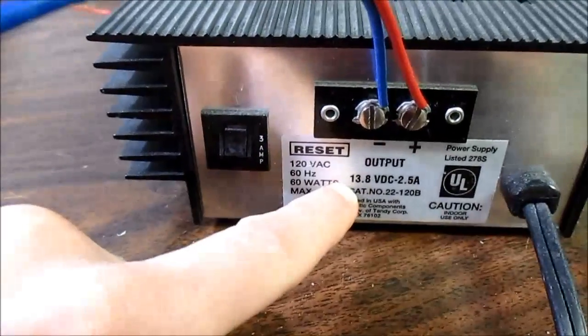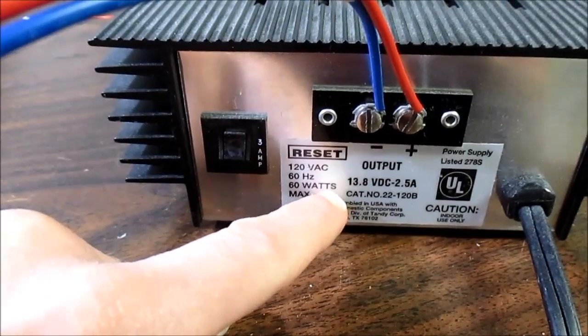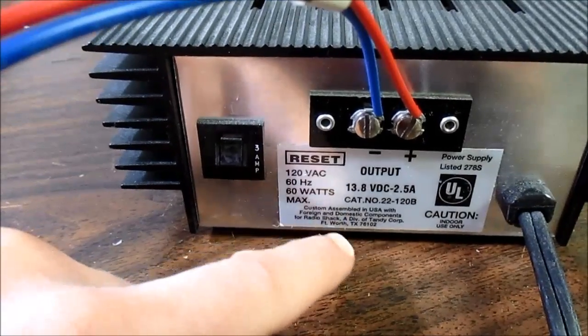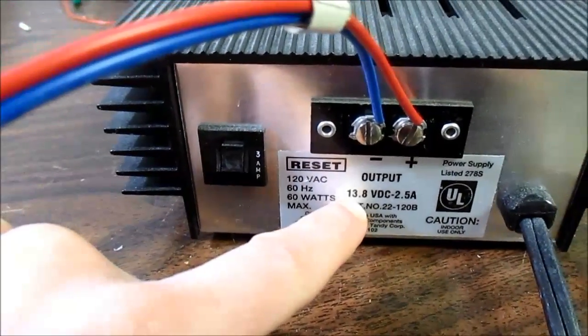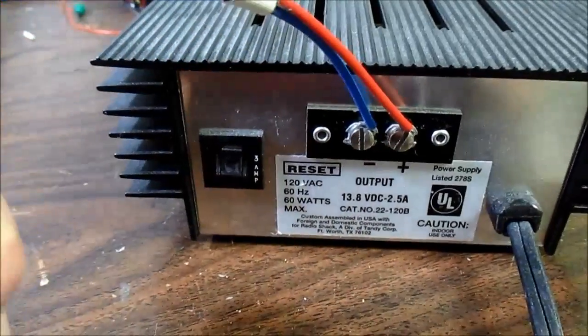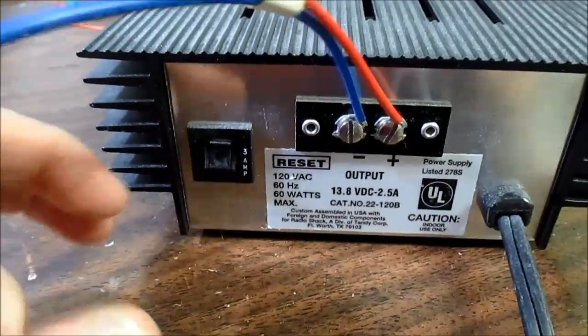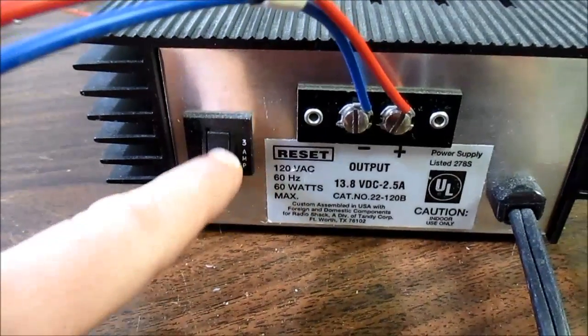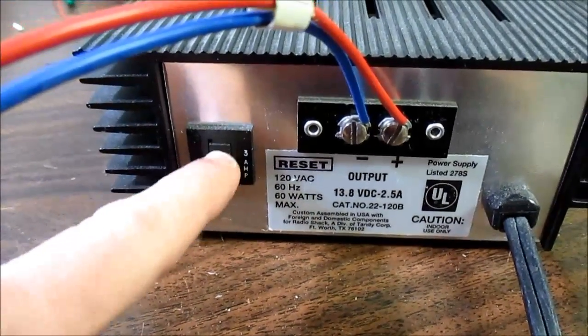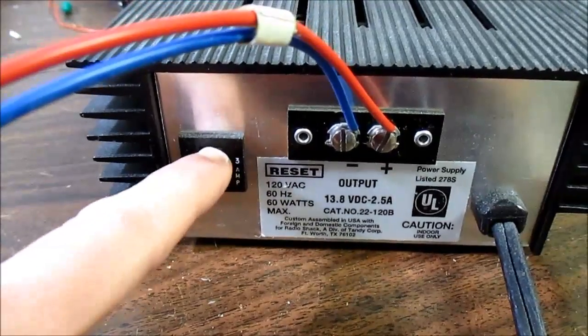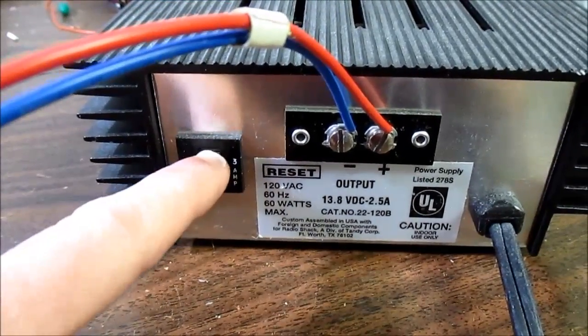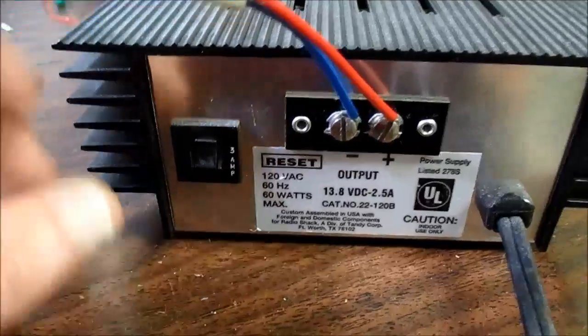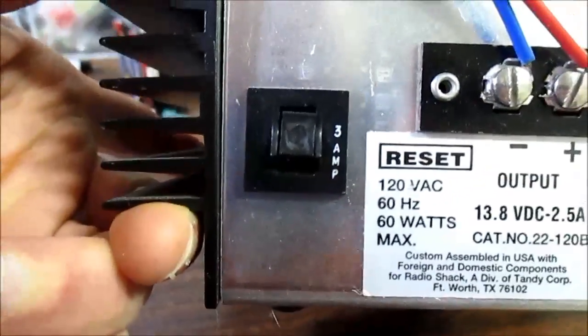Actual rating is 13.8 volt DC 2.5 amps. And we'll check that but I am pretty sure this one puts out more like 14 and a half volts or so. It has a pretty sensitive circuit breaker on there. Even if you overload a little bit this will trip out in a few seconds.